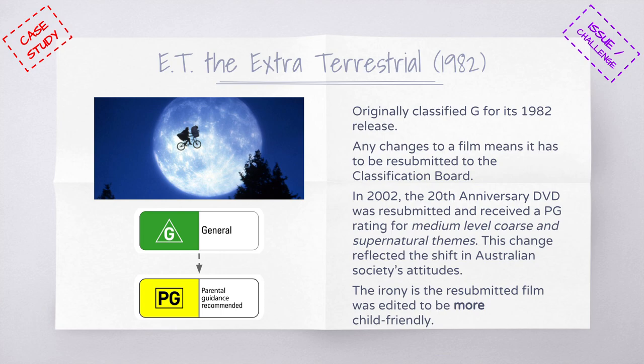A useful case study is ET: The Extra-Terrestrial, a film from 1982. It was originally classified G for its 1982 release — very mild impact, all audiences. For 20 years it continued to be classified G. However, in 2002 the 20th anniversary DVD was resubmitted because of changes to the film and was instead given a PG rating for medium-level coarse language and supernatural themes, reflecting a shift in Australian society's attitudes.